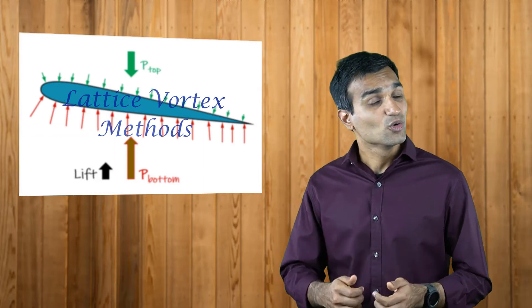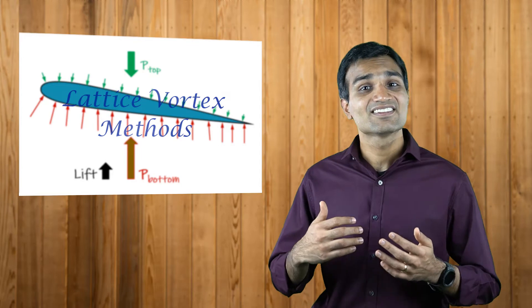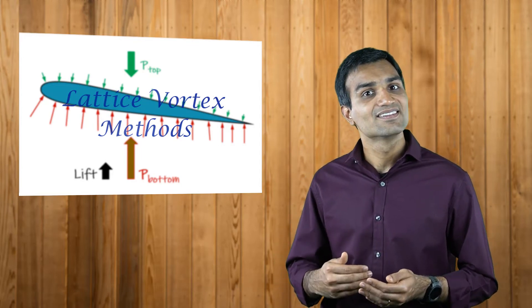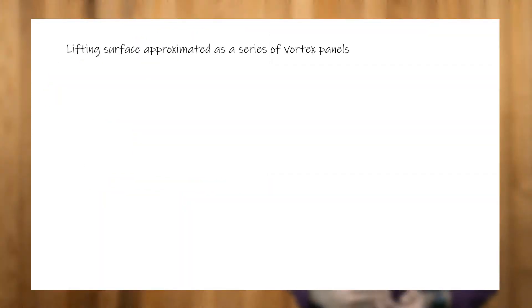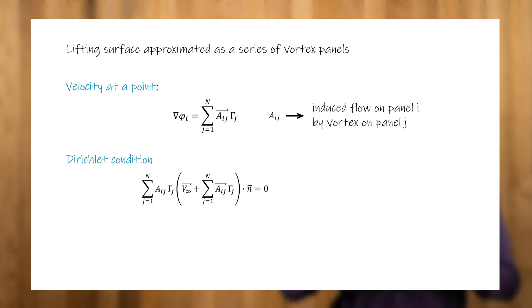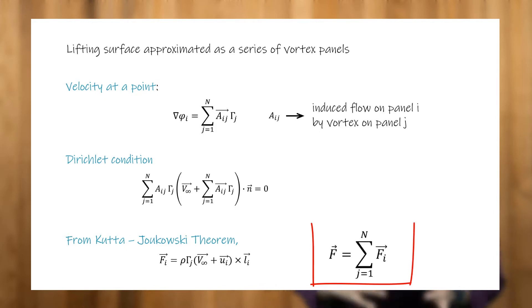This theorem was later used to develop other methods such as the lattice vortex methods. In these methods, the lifting surface is approximated as a series of vortex panels and is applicable for ideal flows such as potential flows. Applying the potential field theory, the velocities at each point can be obtained by adding contributions from each of these vortex panels. We apply a Dirichlet boundary condition with zero normal velocity across the surface to convert this into a system of linear equations to solve for circulation. The final resultant force is obtained by applying the Kutta-Joukowski theorem for each individual panel and these forces are summed up together to obtain the total lift.